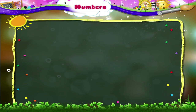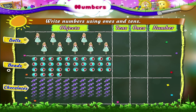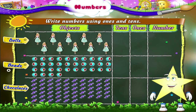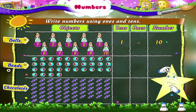Let us now learn how to write numbers using 1s and 10s. Look here, Starry — a group of dolls is drawn here. Let us count how many dolls there are: 1, 2, 3, 4, 5, 6, 7, 8, 9, 10. A group of 10 dolls is written as 1 group of 10. Did you understand, Starry?